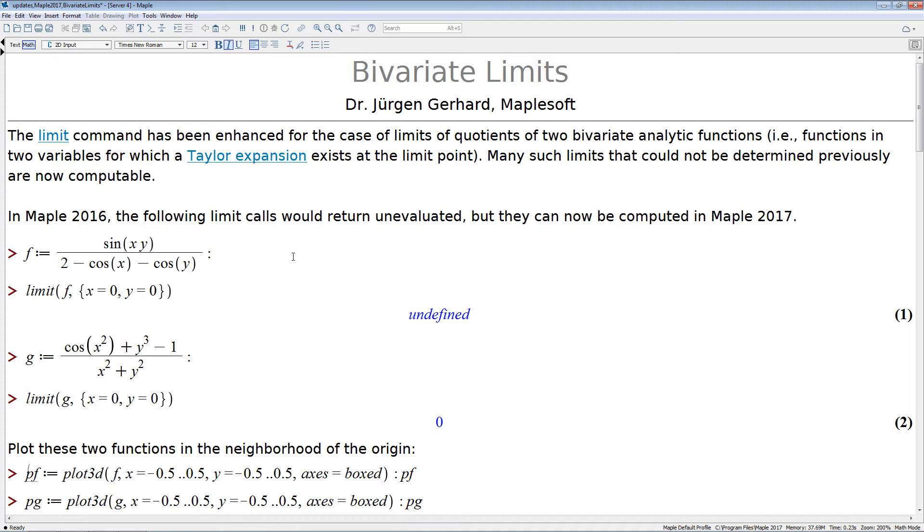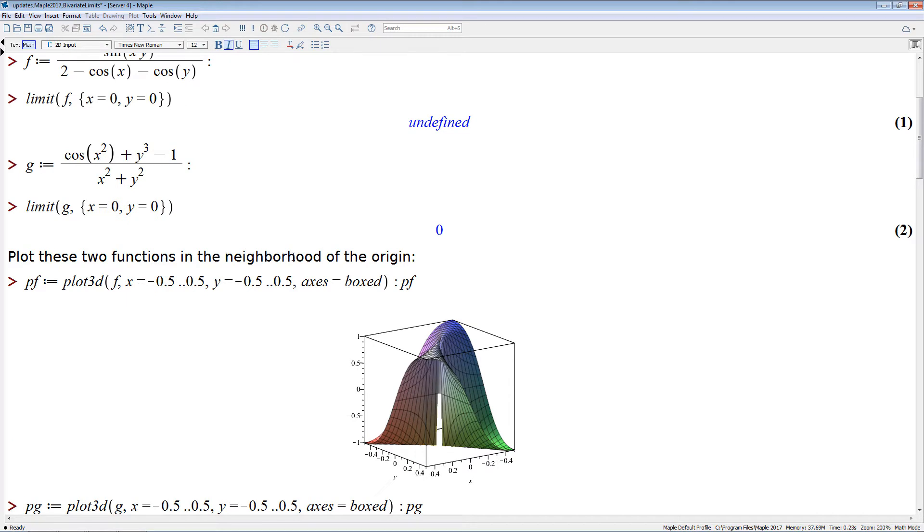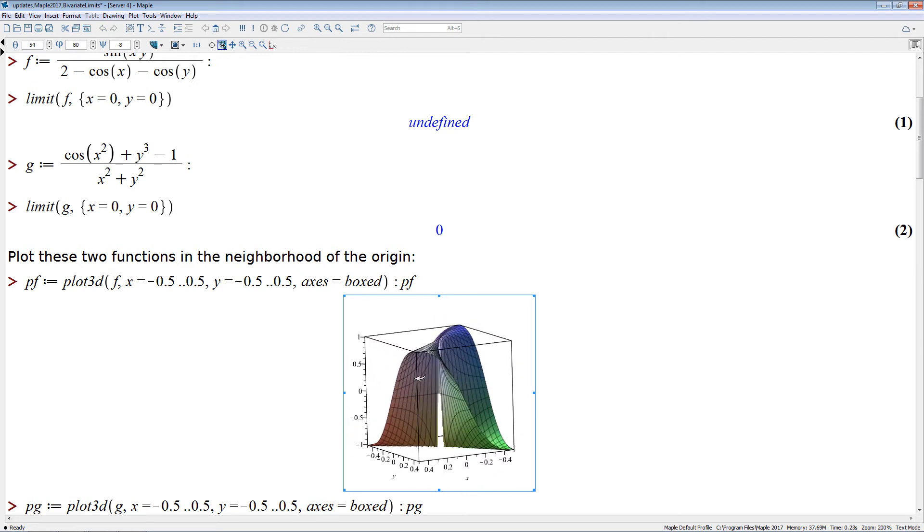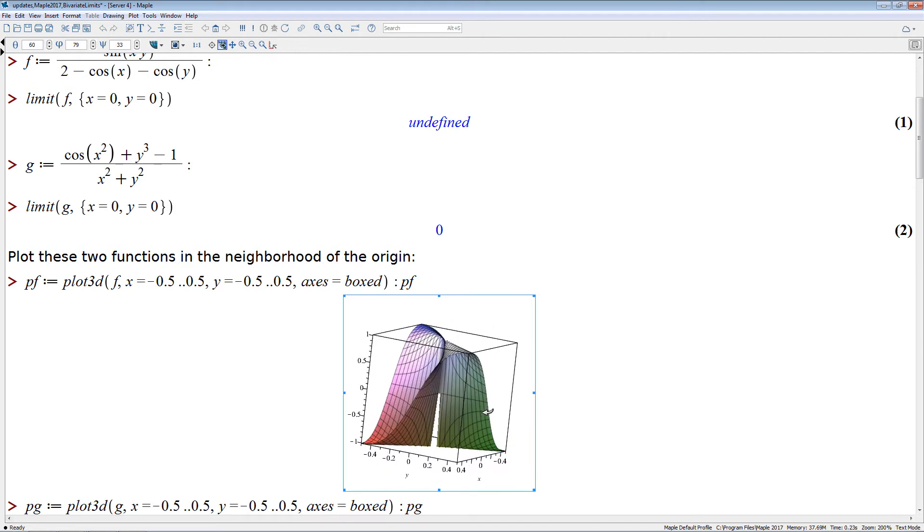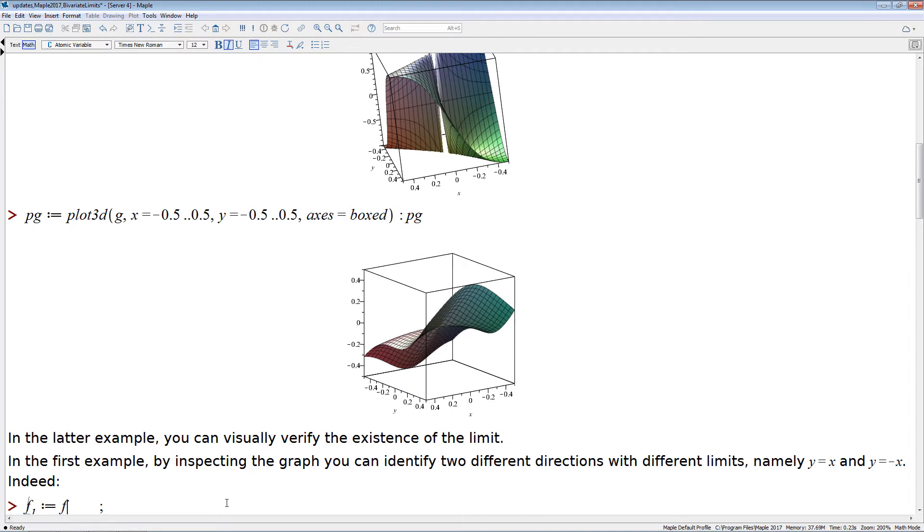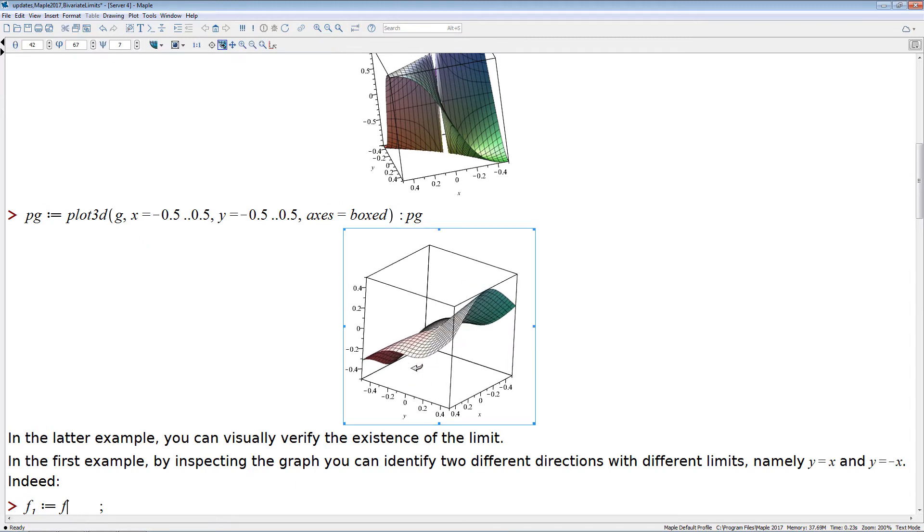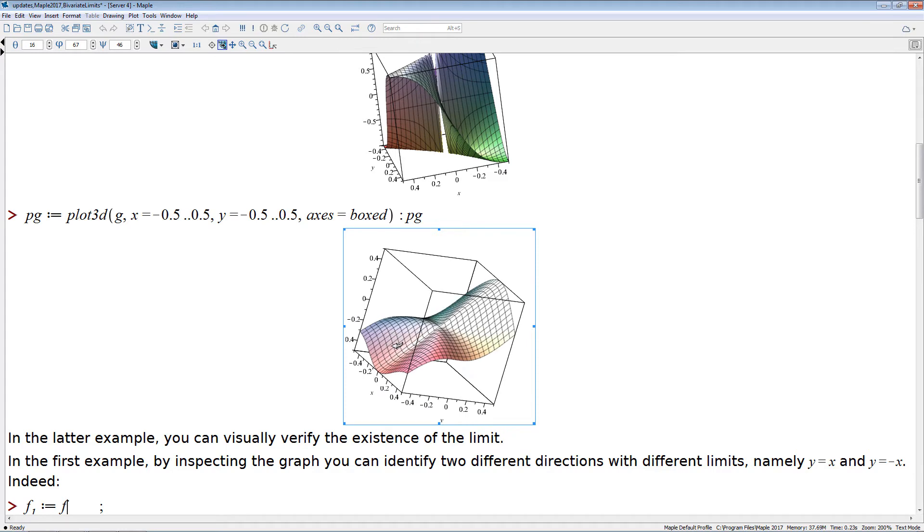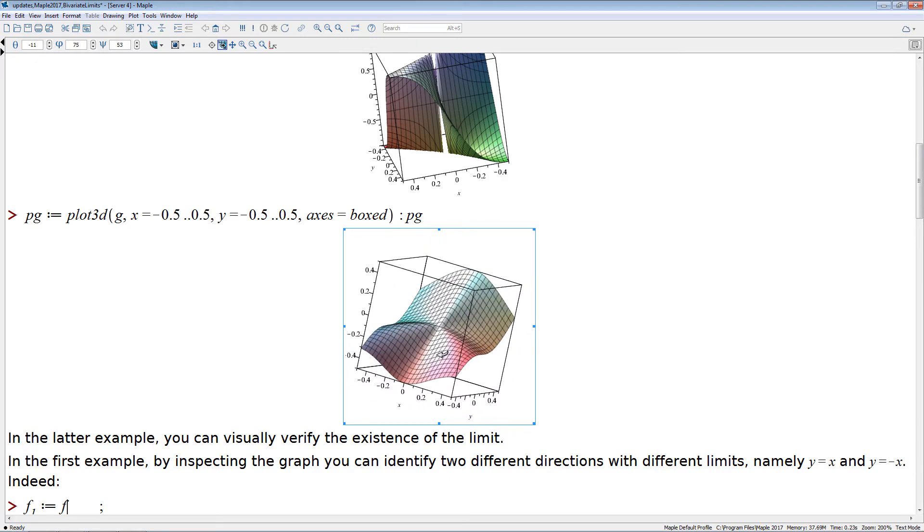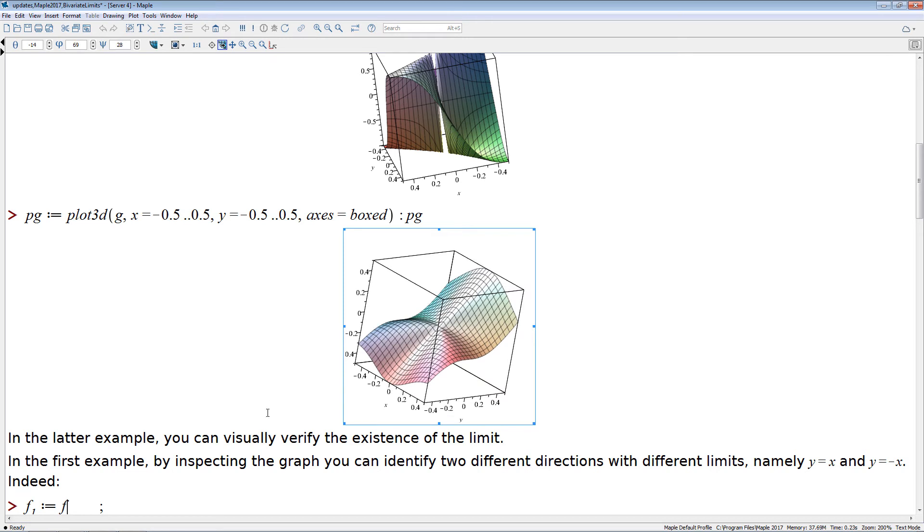So we can visually verify that by plotting those two functions. So we first start by plotting the function f and you can see here clearly that the limit doesn't exist. There seem to be a whole slew, a whole interval of accumulation points and we will describe that in more detail later. And here's the plot of the second function g where you can see it's very nice and smooth. The origin is just in the middle of this surface and you can visually verify that the limit actually exists and is zero.